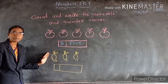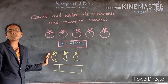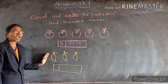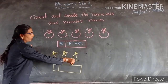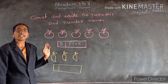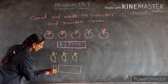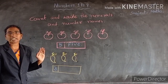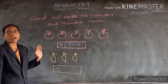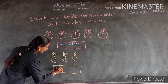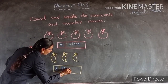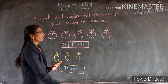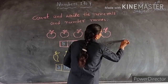What is this? Tell me. Yes, very good. Mangoes. How many mangoes are there? Tell me, children. Count. One, two, three. How many mangoes are there? Three mangoes. Write the number three. Three number, spelling: T, H, R, E, E. Three. How many mangoes? Three mangoes. Three.